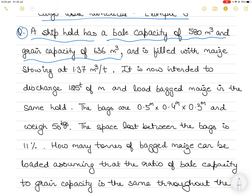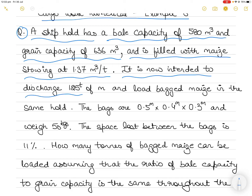Grain capacity is used to assess how much loose grain can be loaded in the cargo hold, and bale capacity is used for bagged cargo, dunnage, boxes, and so on. This cargo hold is currently filled with maize stowing at 1.37 cubic meters per ton — that is the stowage factor of the maize cargo. Since it doesn't say whether it is bagged, we assume it is loose grain.